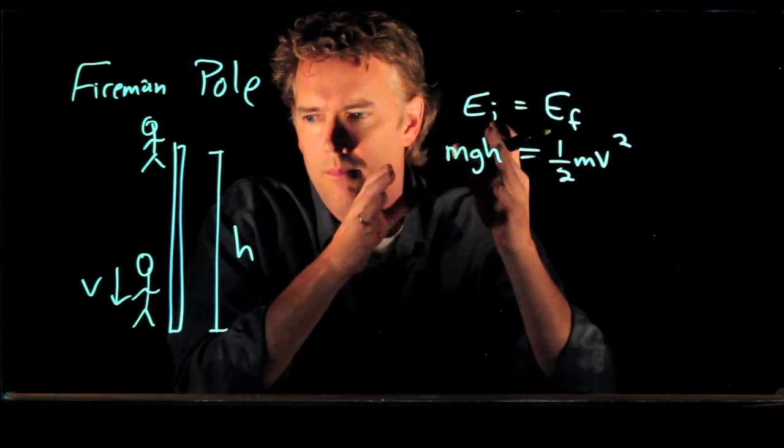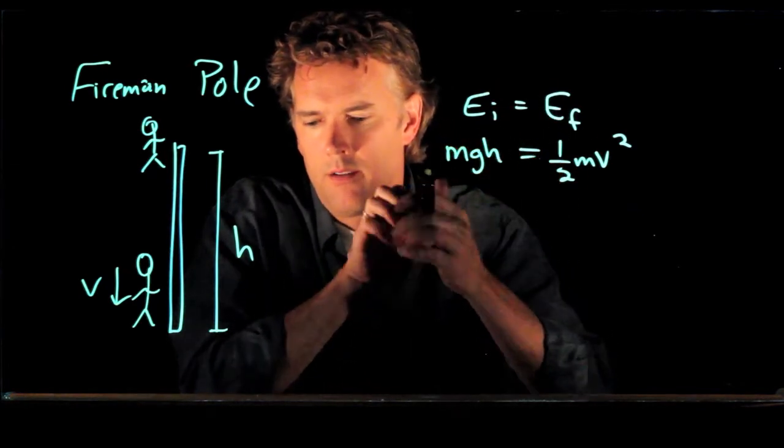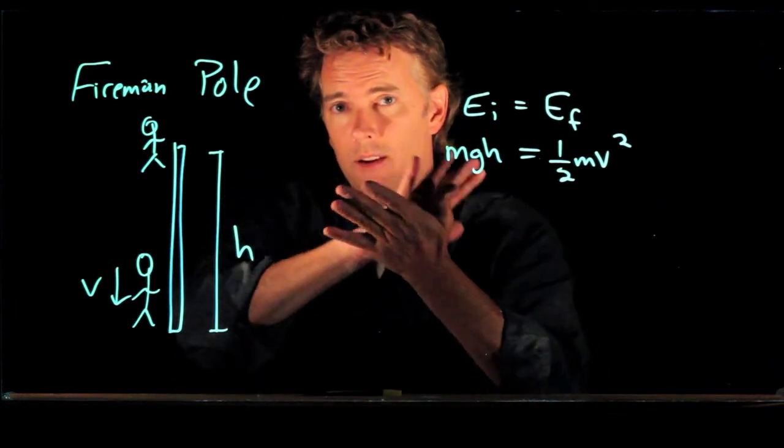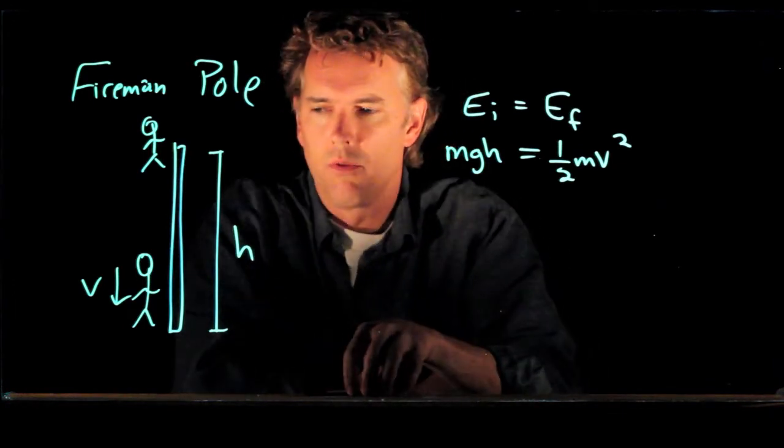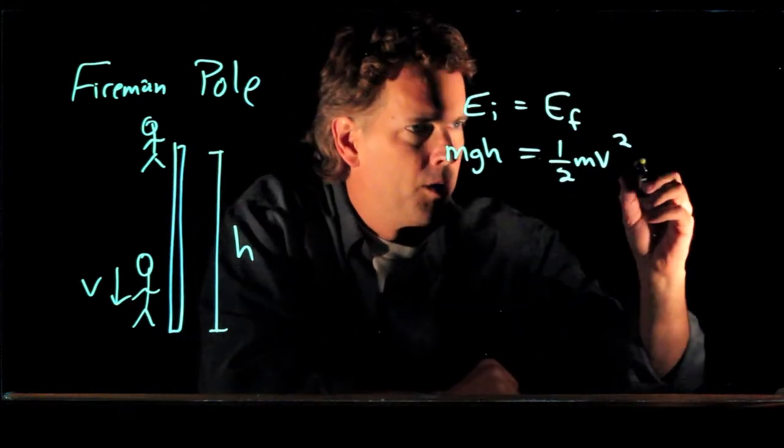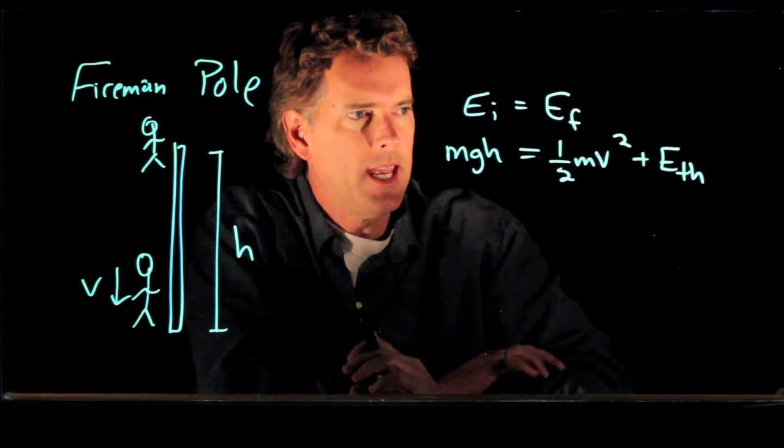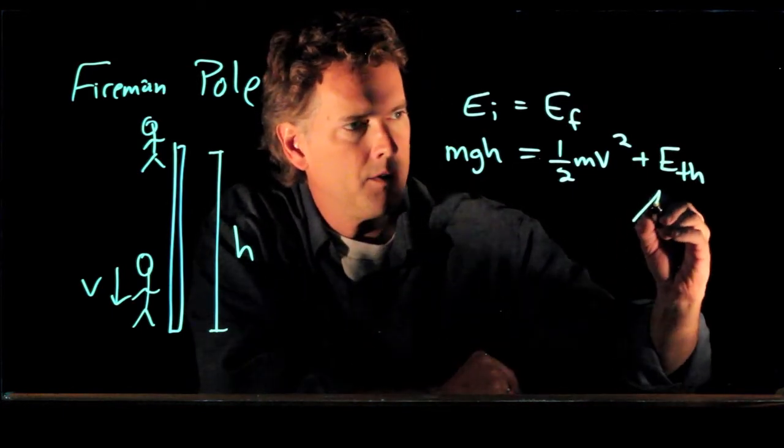The pole has also heated up. There was friction involved there, and when you have friction, you heat things up. So if I rub my hands together, that friction goes into thermal energy. And so over here on the right side, we have to include e sub th, which is thermal energy.